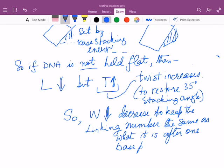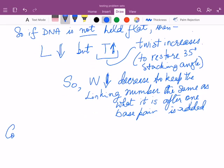Now for the next base pair that's added, the linking number will again decrease. The twist will go up to compensate and the writhe will decrease again.